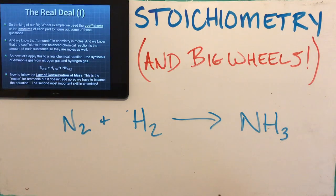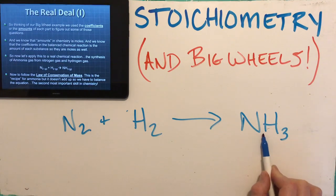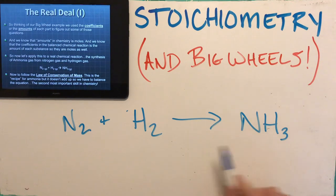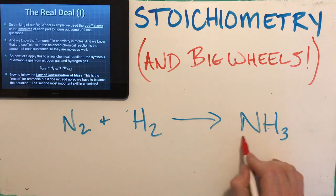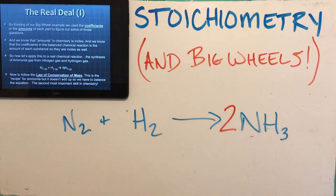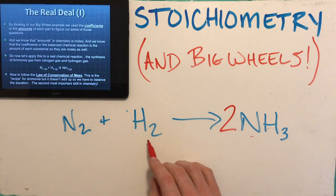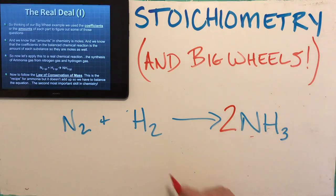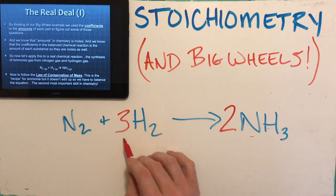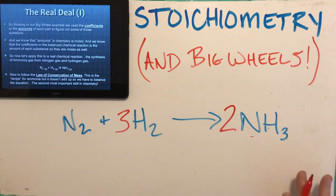Now we know there's a problem with this — I've got two N's going in and only one coming out, so this doesn't balance. I'm going to balance it: two N's are going in, only one is coming out, so a 2 goes in front of NH₃. And of course two hydrogens going in — two times three is six hydrogens coming out — so 3H₂. Now this is balanced.